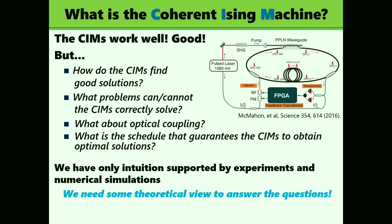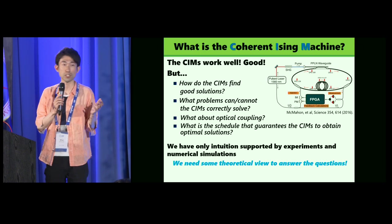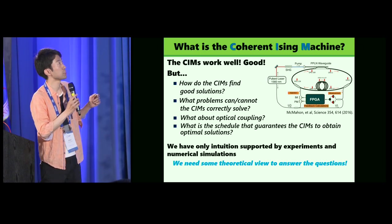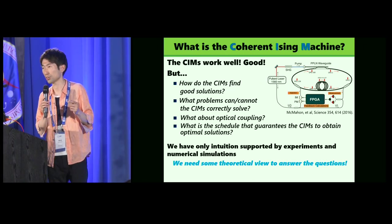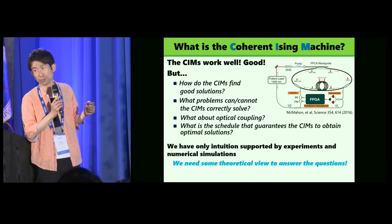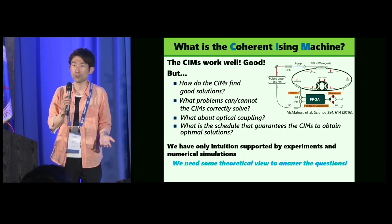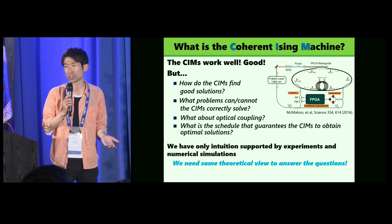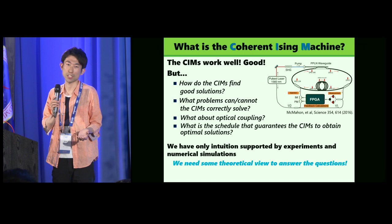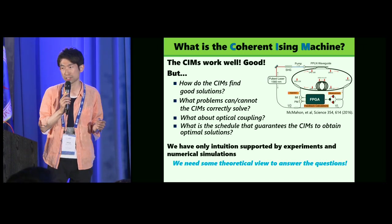How do the CIMs find good solutions, and what problems can or cannot the CIMs correctly solve? In actual CIMs, we utilize now the FPGA to manage coupling of DOPOs, but originally we utilize the optical couplings, the direct coupling of DOPOs. So what about this efficiency of optical coupling? The last one is the ultimate question to be solved. What is the schedule that guarantees the CIMs to obtain optimal solution? Unfortunately, we now have only intuition supported by experiments and numerical simulations. So we now need some theoretical view to answer the questions.